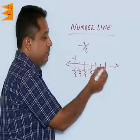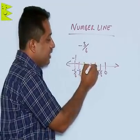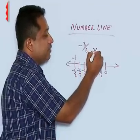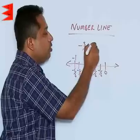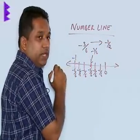So, between 0 and minus 1, we are dividing into 6 parts and we find that the third division represents minus 3 by 6. We could have also simplified this value of minus 3 by 6 and written it as minus 1 by 2.